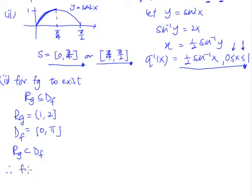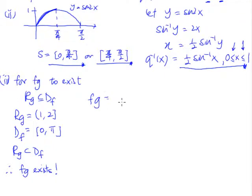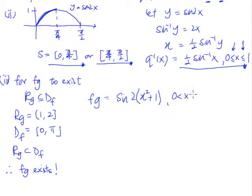The range of g is a subset of the domain of f, therefore fg exists. To find the rule of fg, we substitute g into f: fg(x) = sin(2(x² + 1)). The domain of fg is the domain of g, which is from 0 to 1, including 1 but excluding 0.